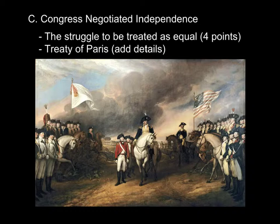Number four, the British received American promises not to try to stop Loyalists from attempting to recover some of their lost property during the war. The British were trying to help the Loyalists gain something back from all that they had lost, though unfortunately a lot of this never actually managed to be done. Number five, the Americans promised to cease confiscating Loyalist property, so after the war they stopped punishing Loyalists by taking away their property.